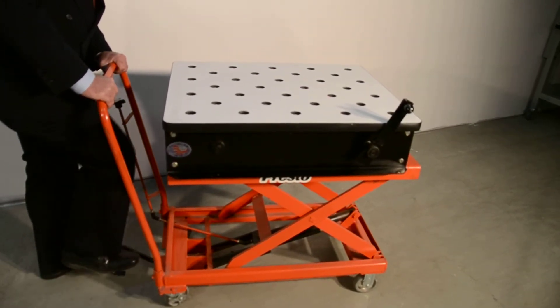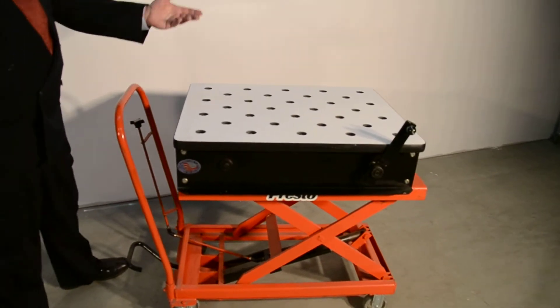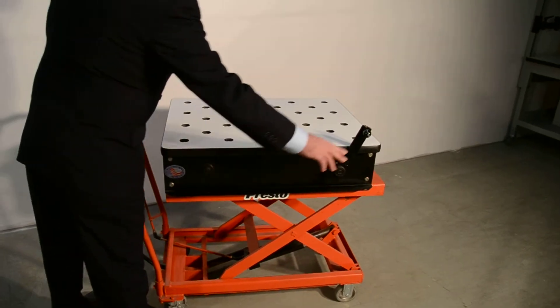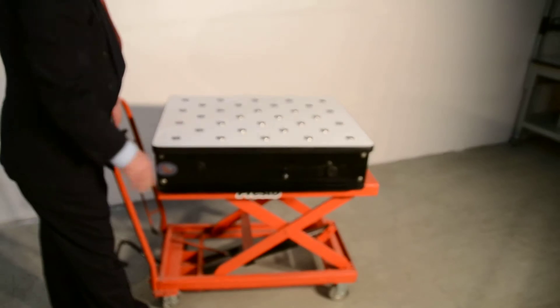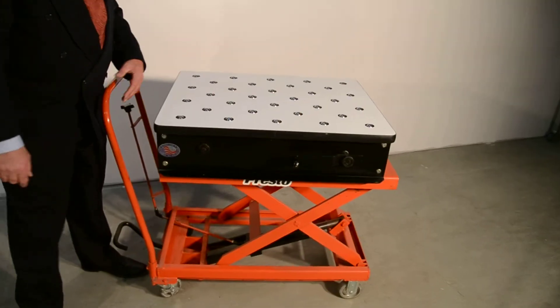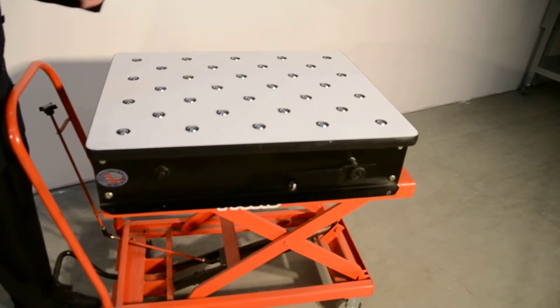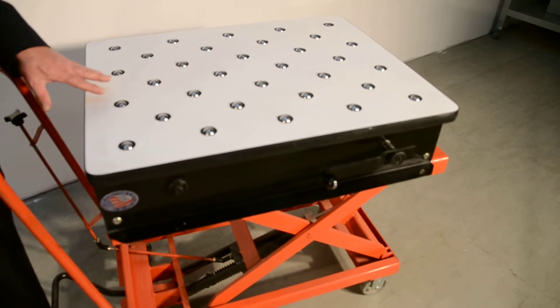You can load and offload at different heights. Once you get to the point where you want to offload, you put it down on the handle again, lifting up to 500 pounds. Roll the piece off. You're ready to go to work. No lifting required.